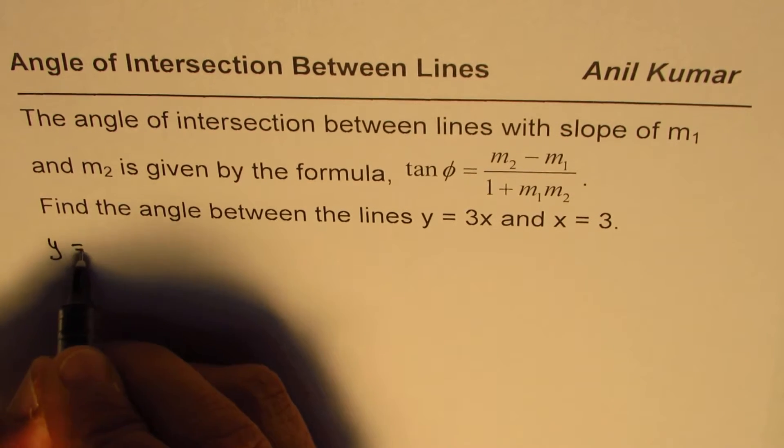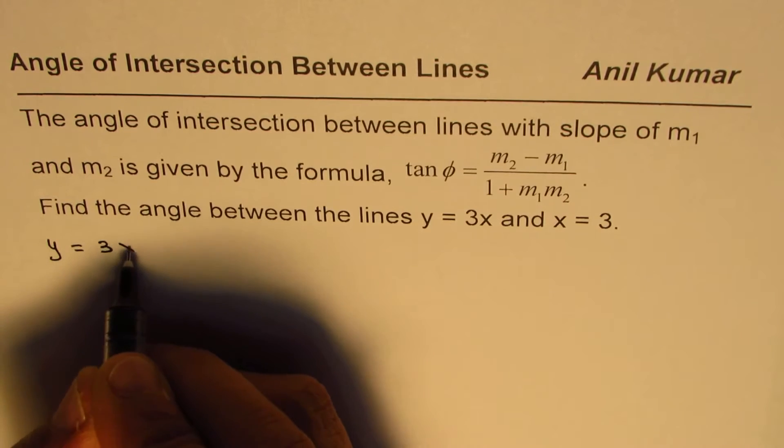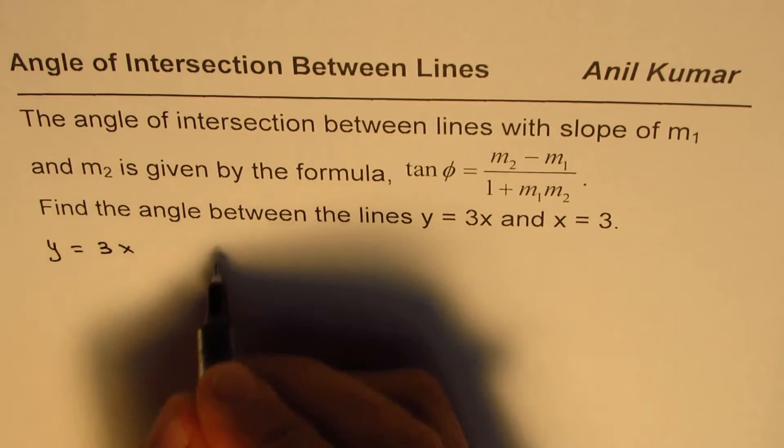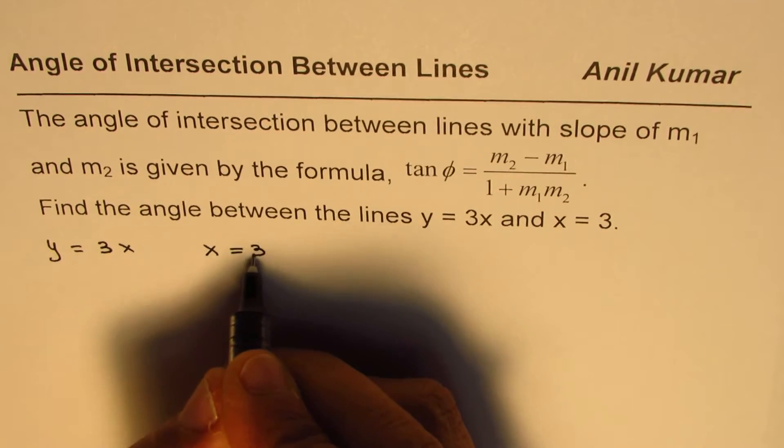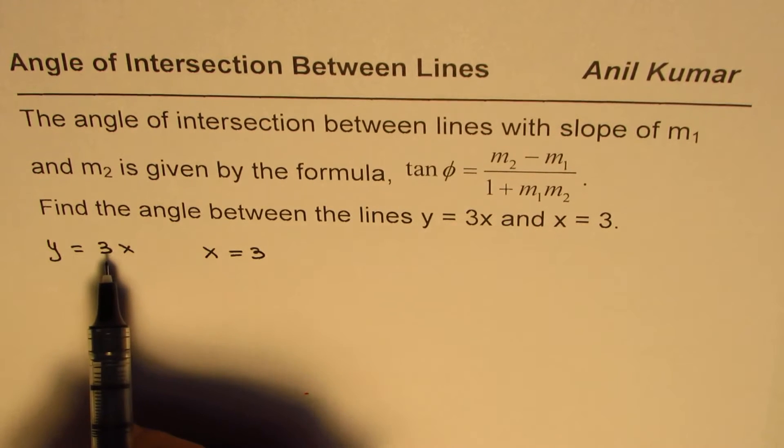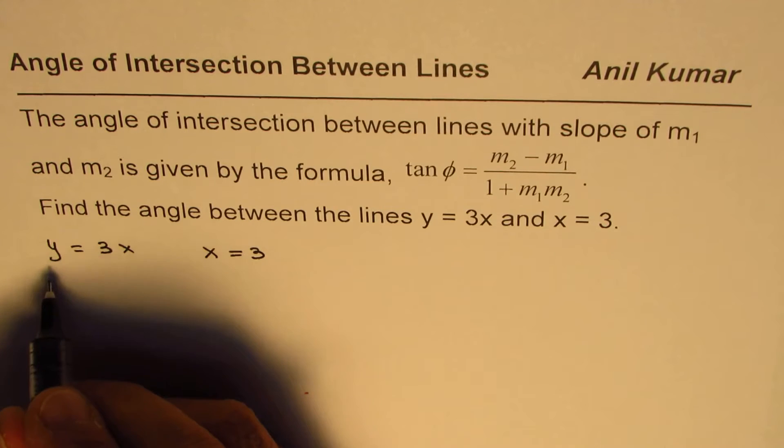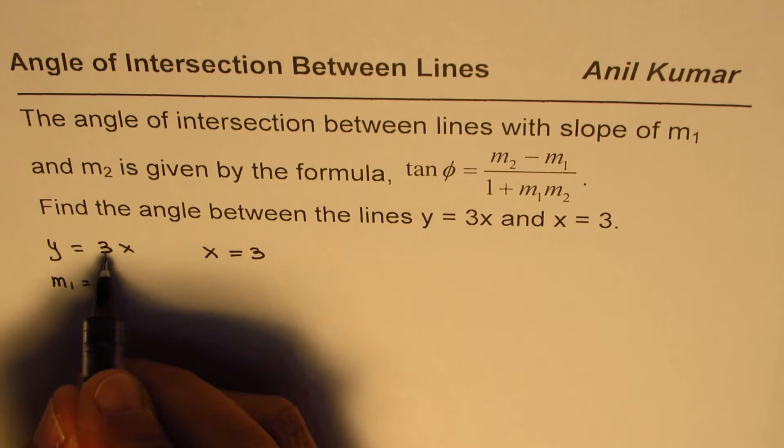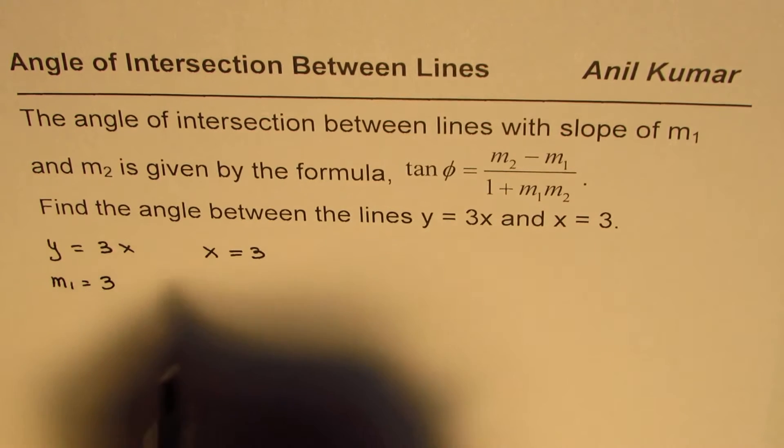So we are given two different lines. One is y equals 3x and the other one is x equals 3. Now in this particular case, what is the slope of first line? Let us say that slope of this line equals 3. It is in the slope intercept form.